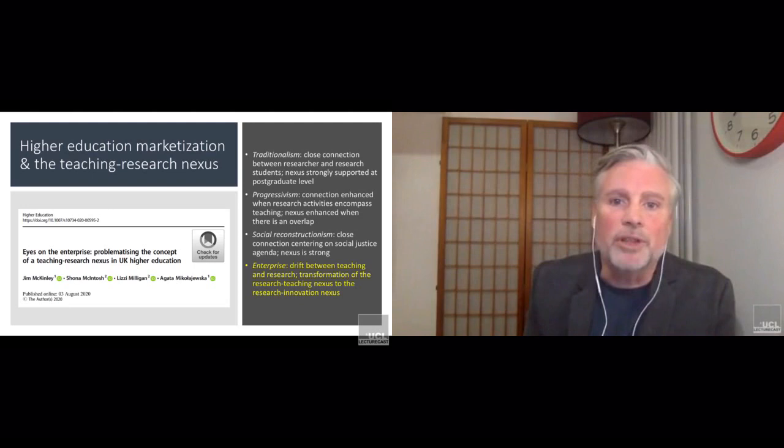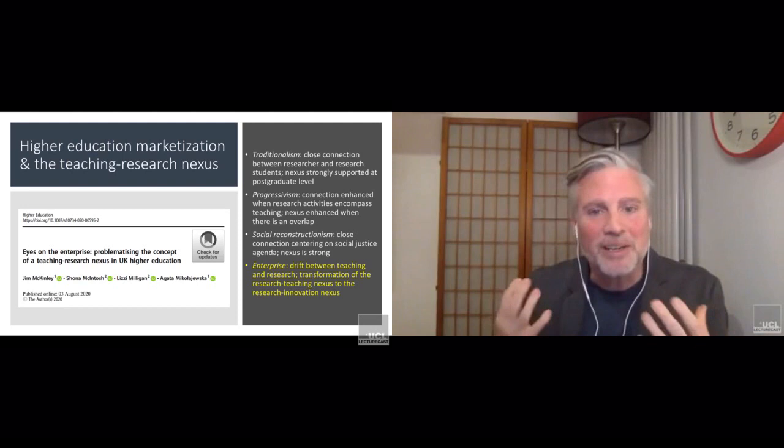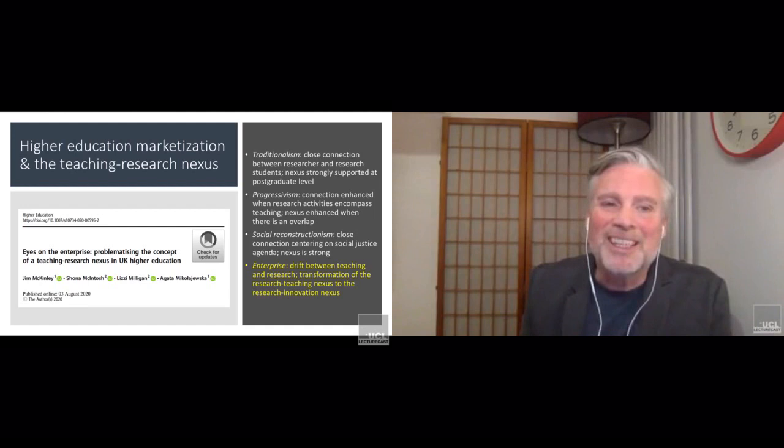Looking at the relationship between teaching and research, how that plays out as far as different models of higher education go. We highlight these four models. If you look at traditionalism, you see a close connection between researcher and research students, so this is where we see a nexus being strongly supported at the postgraduate level. There's progressivism—a connection enhanced when research activities encompass teaching. Social reconstructionism is a close connection centering on a social justice agenda.